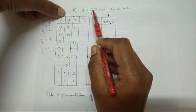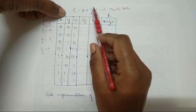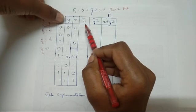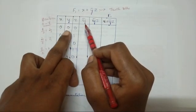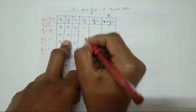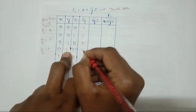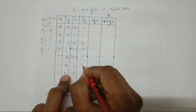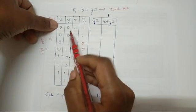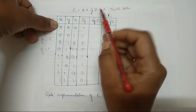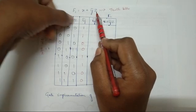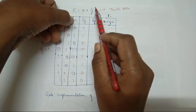Since y̅ is needed and is not directly available, we prepare the y̅ column. y̅ is the complement of y: wherever y is 0, y̅ is 1, and wherever y is 1, y̅ is 0. So the y̅ column is: 1 1 0 0 1 1 0 0. Now y̅ is ready. Next, y̅z — z is already there; if z̅ were needed we would prepare a z̅ column first.